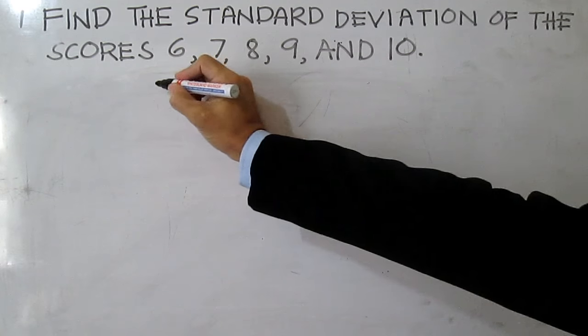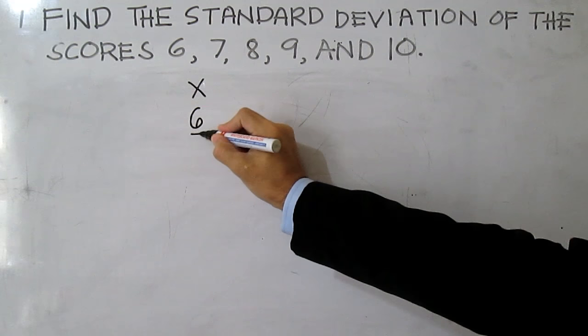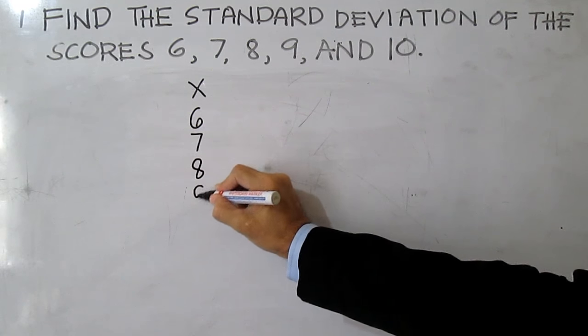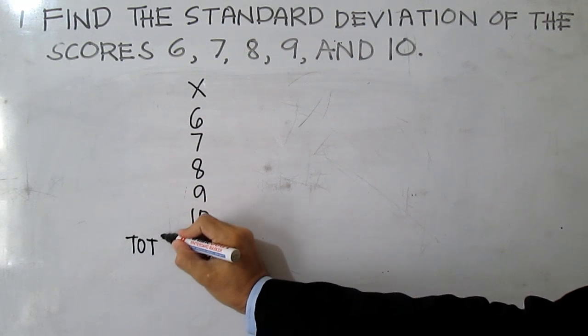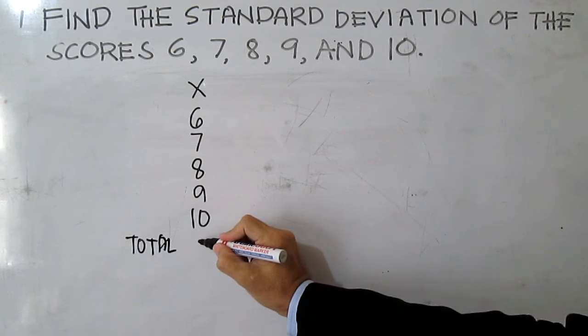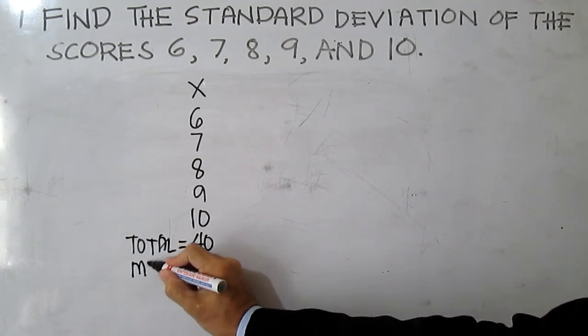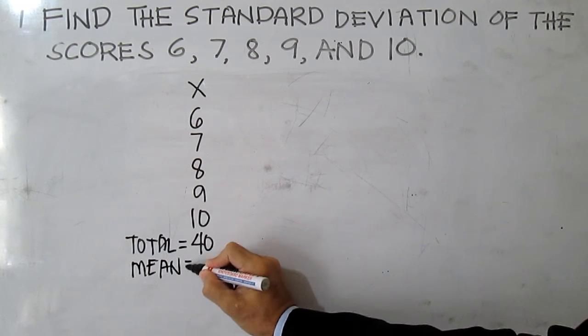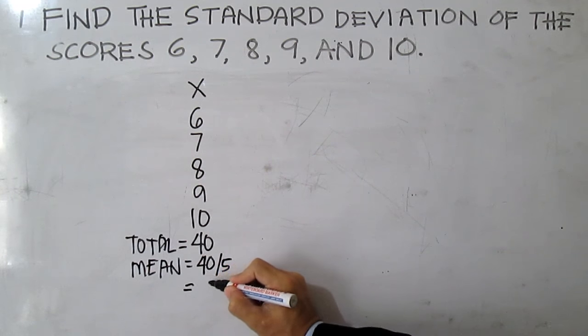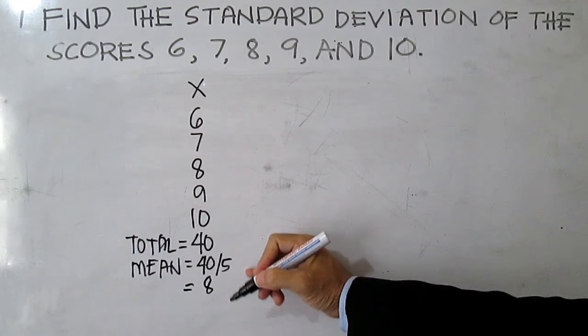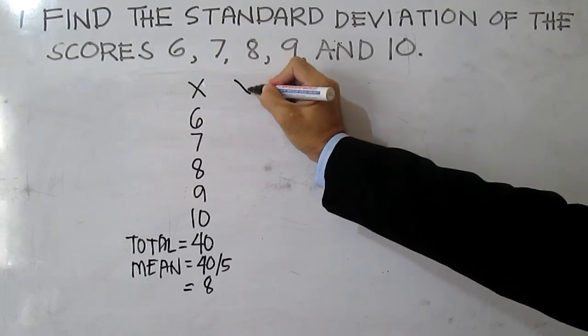The scores are 6, 7, 8, 9, and 10. You find the sum, this is 40. Then the average: 40 divided by the number of scores, which is 5. 40 divided by 5 is 8, so this is your average or the mean. Let's represent the mean with the variable X bar.